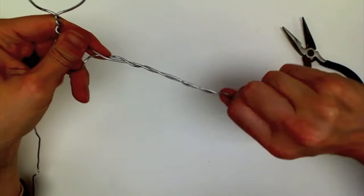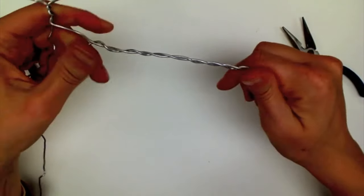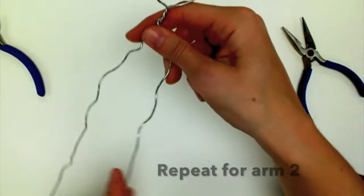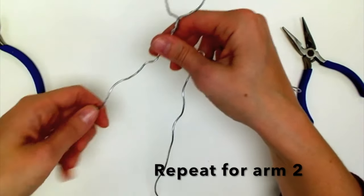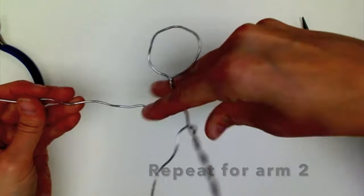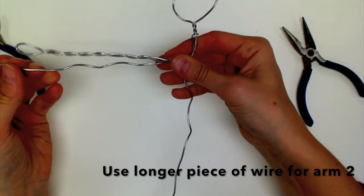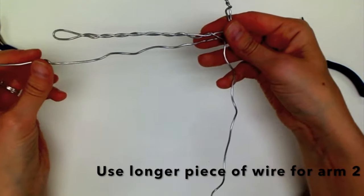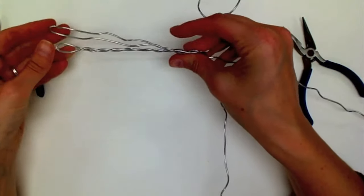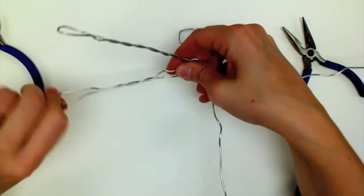The other piece of wire that you didn't use for your first arm will be used to make your second arm. Use your first arm to find the right length by bending it across the body to line it up. Bend it in towards the center and twist to finish off the second arm.